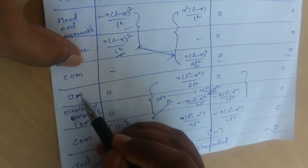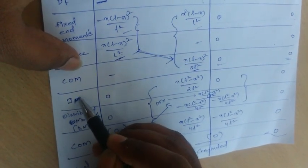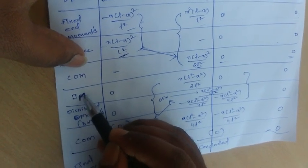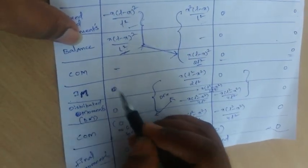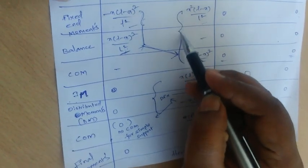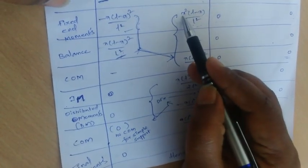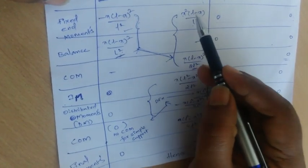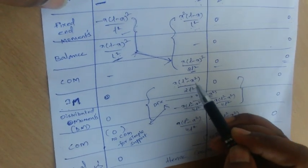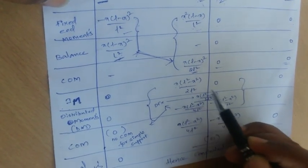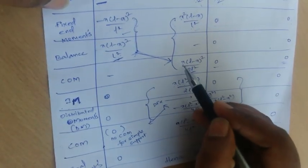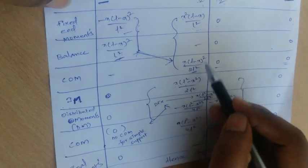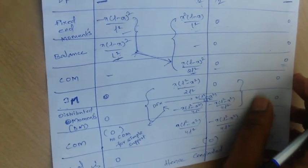As part of the iterative process, we return to calculate updated moments. The summation at end A is zero. At joint BA, combining the fixed-end moment and carry-over gives X²(L−X)/L², and at joint AB the combined value is X(L²−X²)/(2L²). These are written into the table.